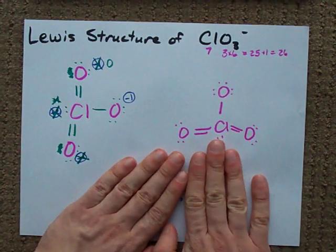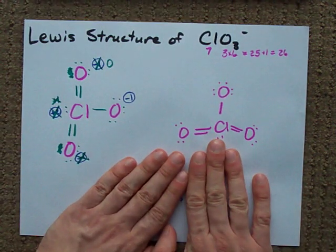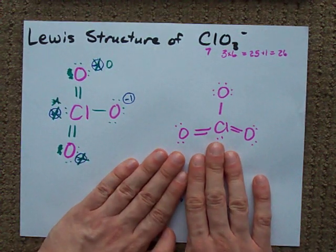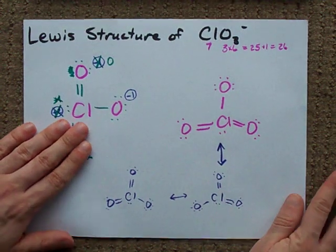It's not like two of the bonds in this ion are shorter than another. Alright. That's the Lewis structure for ClO3-. Notice we had to use formal charge to agree on it. And if you need resonance structures, these are them.